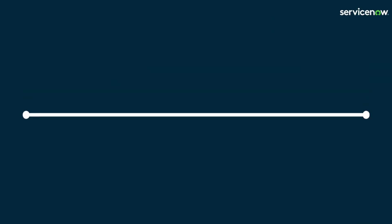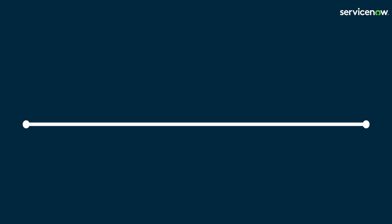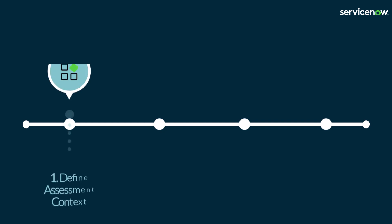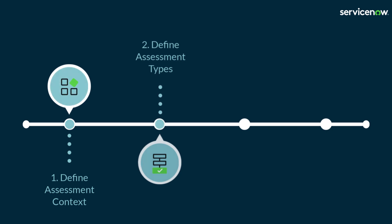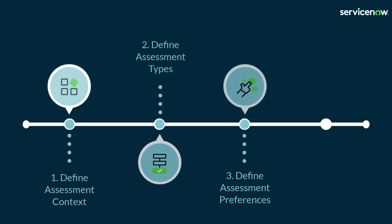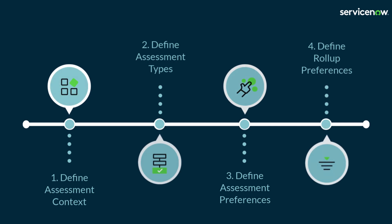So what are the steps required to set up the RAM? There are four key steps for users with the risk admin role. One, define the assessment context. Two, define the assessment type, including factors and scoring logic. Three, define assessment preferences and settings. And finally, number four, define how the risk rating should roll up through the hierarchies.